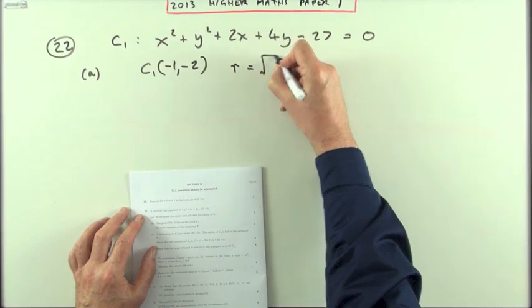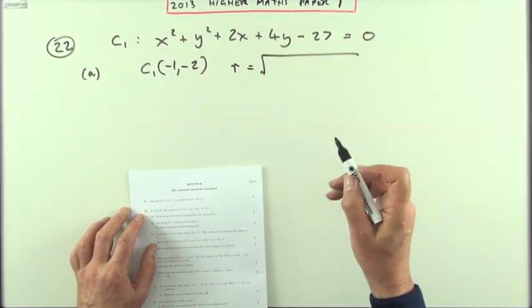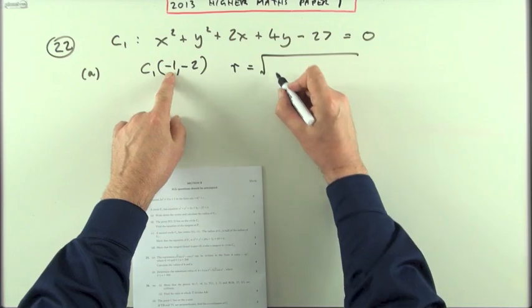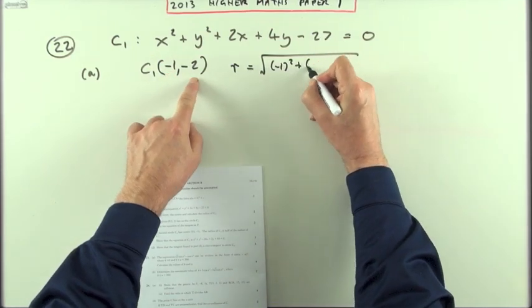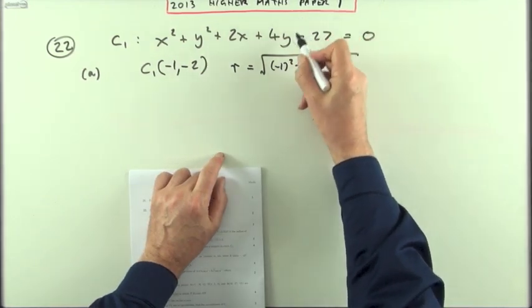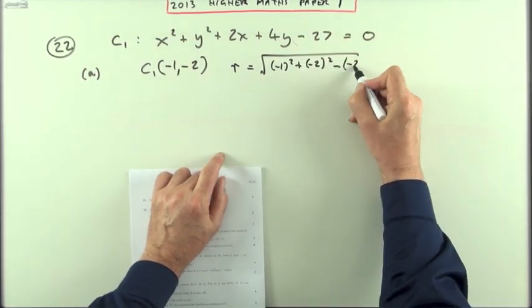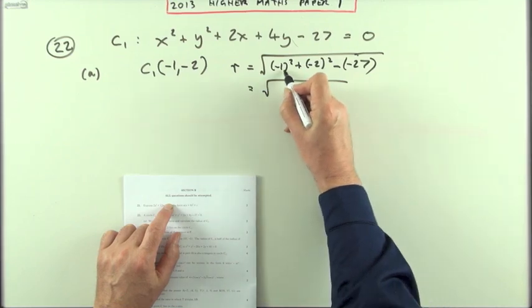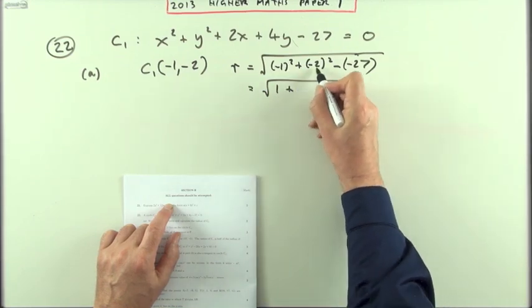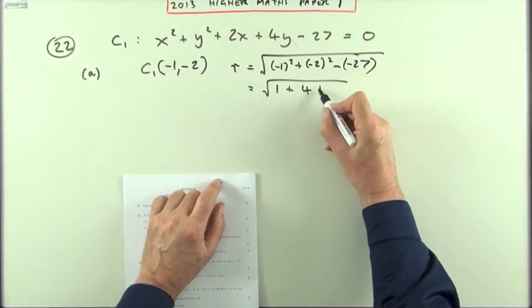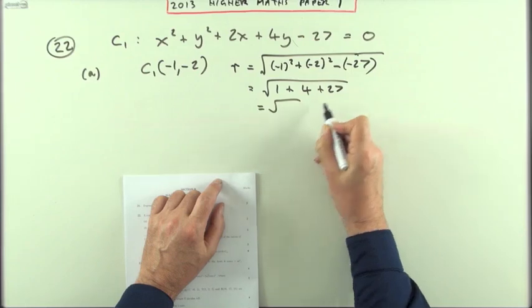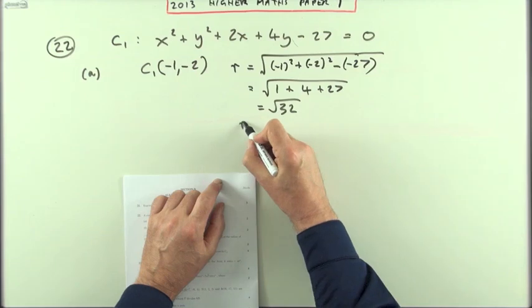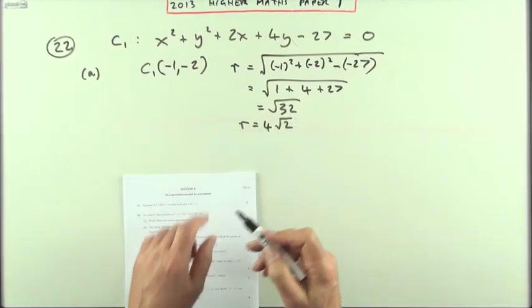And the radius will be the square root of, you can use the formula on the front with the f and the g, but it's the same thing essentially as the coordinates of the centres. It's the coordinates of the centres squared. Subtract the number at the end, and that happens to be a negative. So it's to subtract a negative 27. So it's going to be the square root of negative 1 squared is 1, negative 2 squared is 4. Take away a negative, it'll be plus 27. That's root 32. That's two 16s. Root 16 is 4, so that's 4 root 2.